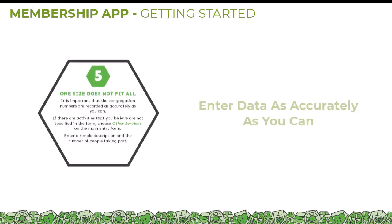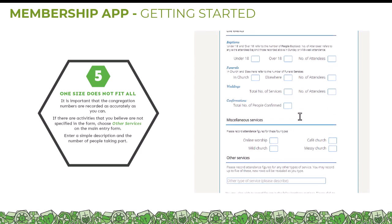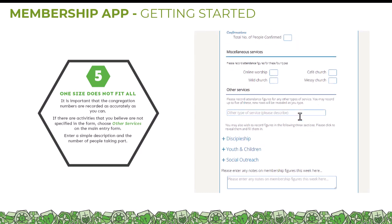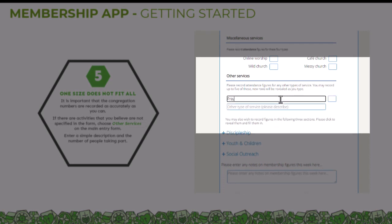Don't forget, enter your congregation data as accurately as you can. If you believe that there are activities not specified on the membership form, you can use the other services field. This will help us catch any edge cases for activities that, for example, are being trialed or tested. Simply enter a description and number of people taking part.